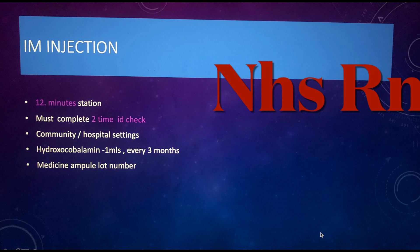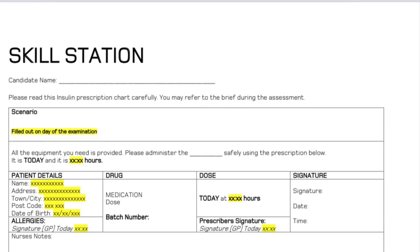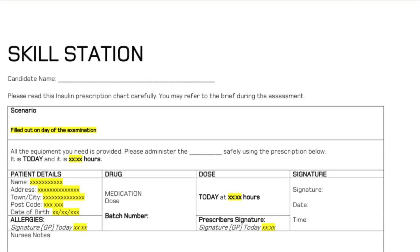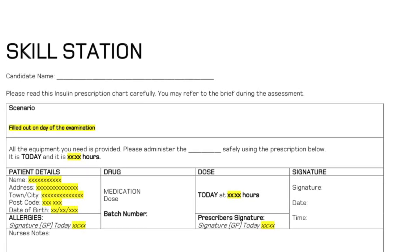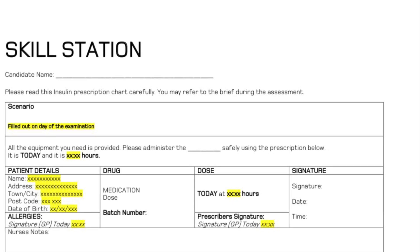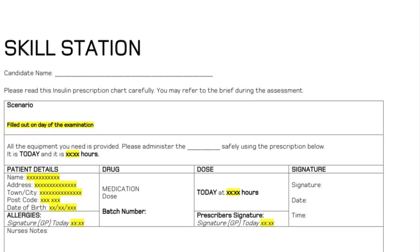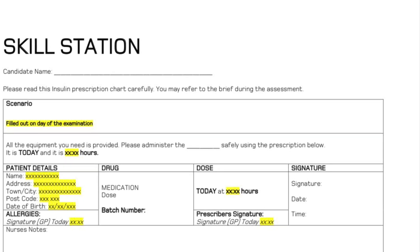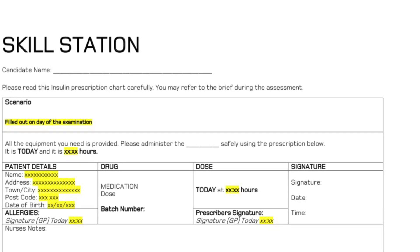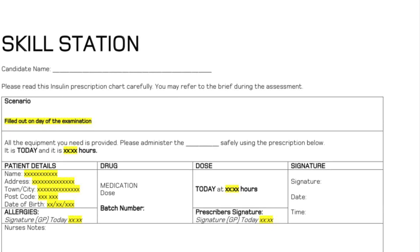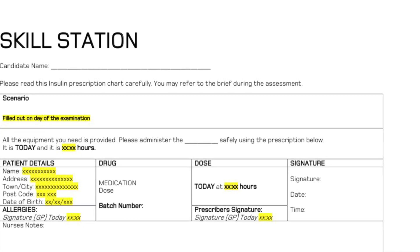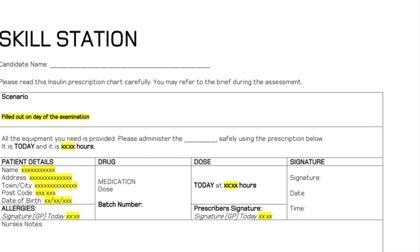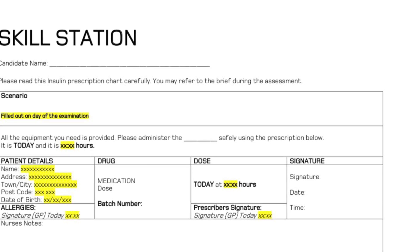Initially, just before the OSCE IM injection station, you will get a case file — a paper with everything: patient name, address, date of birth, what injection you need to give, how to give it, and everything else. That paper acts as a kind of drug chart. You need to compare it with the medication and ID check, so read it carefully before entering the station.